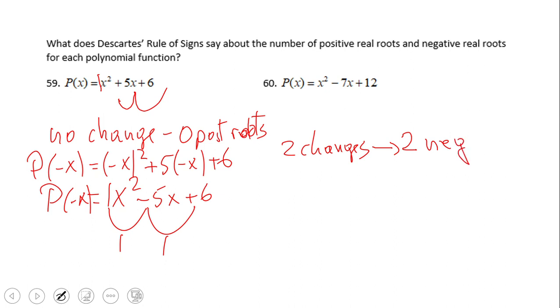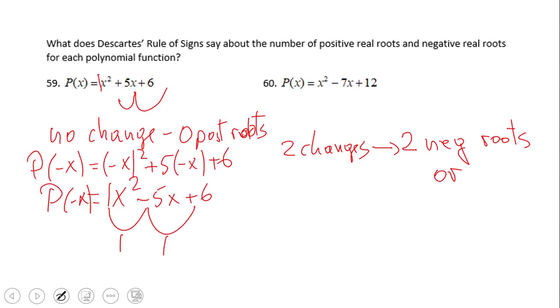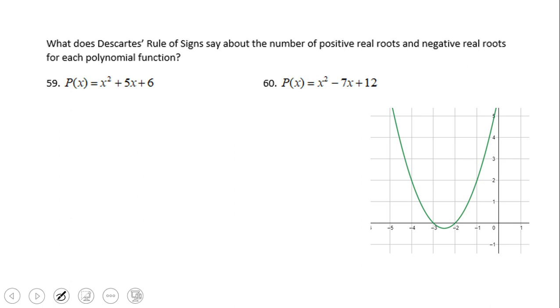What does this tell us? It tells us that we have two negative roots, or don't forget the second part, less than by an even number. Two minus two is zero, so zero negative roots. That's what Descartes' Rule of Signs tells us about number 59. Now let's take a look at the solution to the roots. We did the graphical probably, but we can do factoring, and you see here we have two negative roots, so yes it does match with what we meant before.